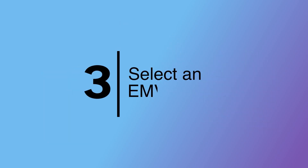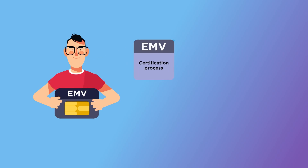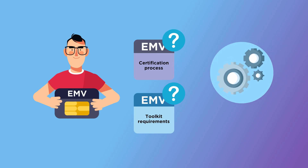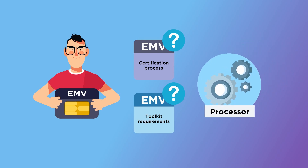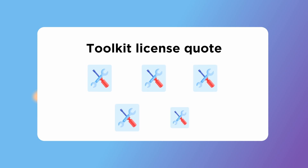Step 3: Select an EMV Toolkit. You must discuss the EMV certification process and clarify EMV Toolkit requirements with your acquirer's processor. If necessary, you should also obtain a Toolkit License Quote. This step is crucial for budgeting because some toolkits are quite expensive.